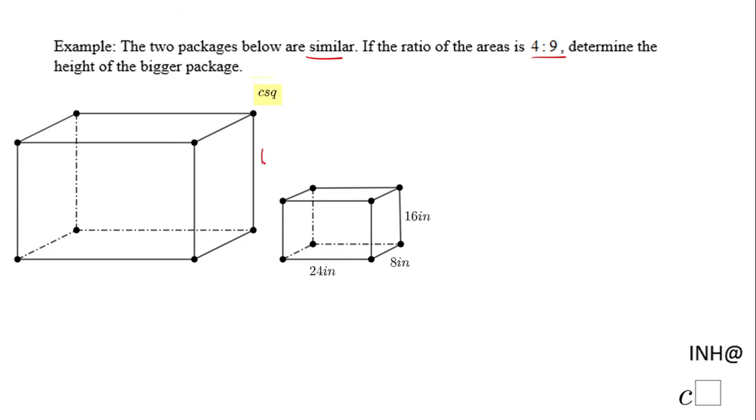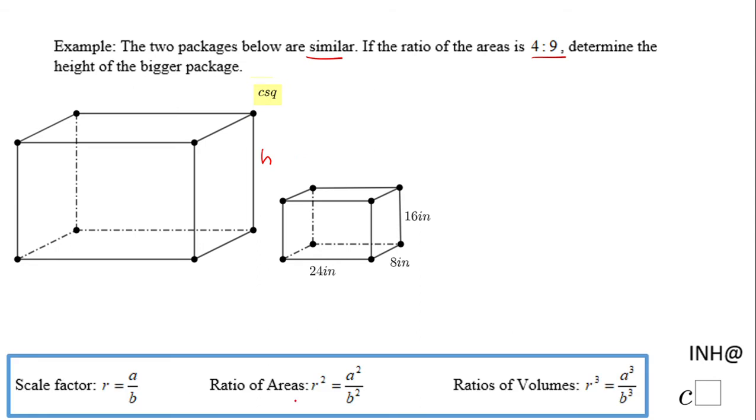We're going to start from the ratio of the areas which is 4 over 9. I want you to take a look that ratio of the area, which I call r squared, is in this case 4 over 9. I need to find r.